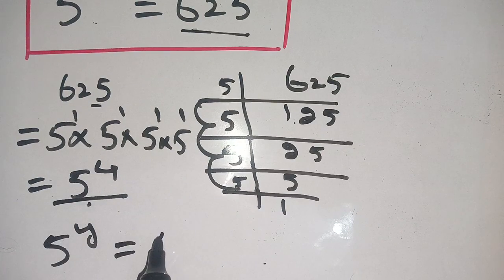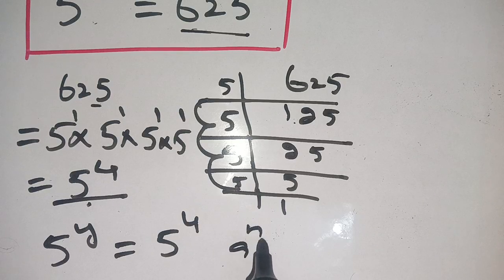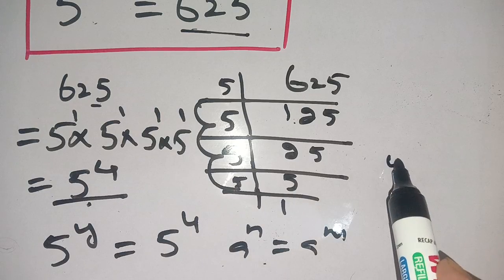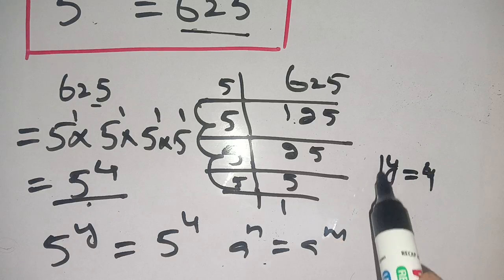In place of 625, we write 5 to the power 4. It is in the form of a to the power n equals a to the power m. We can compare its power, thus y is equal to 4.